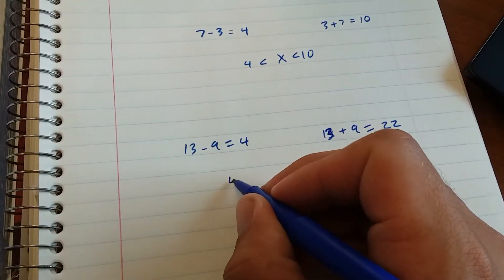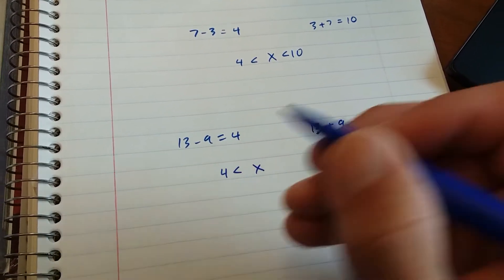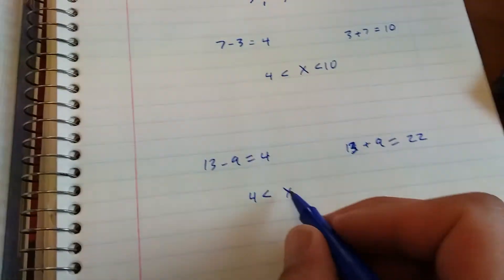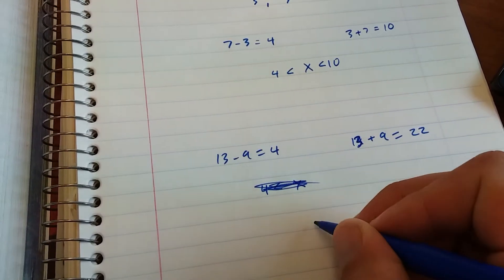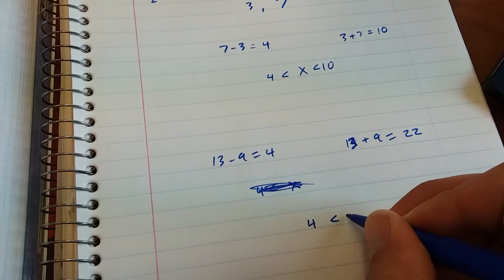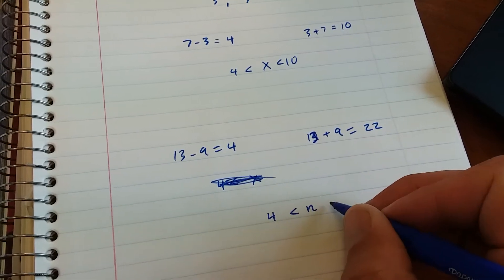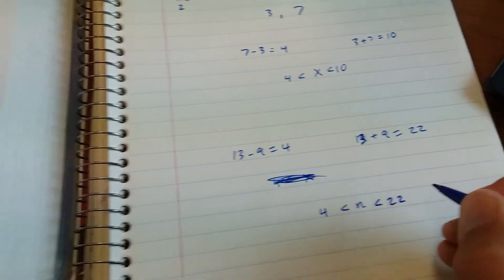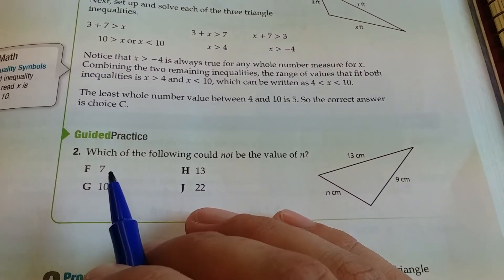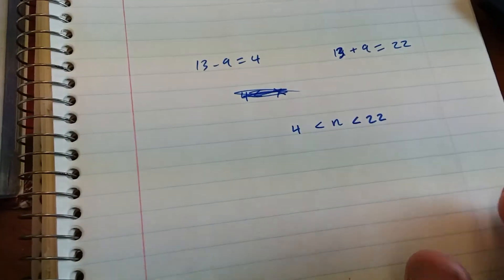Okay, so it has to be at least four, so the side x, or actually we're using n here. So n has to be greater than four but then less than twenty-two.